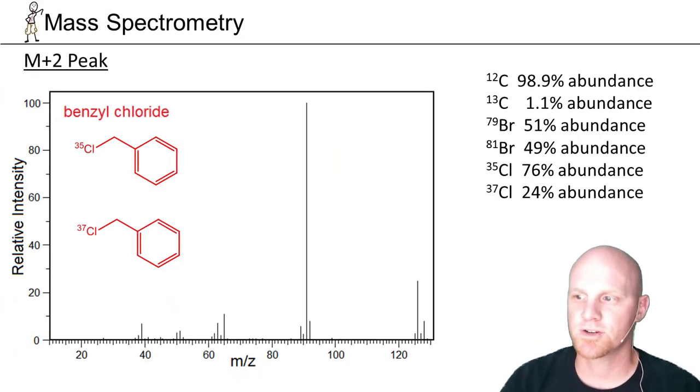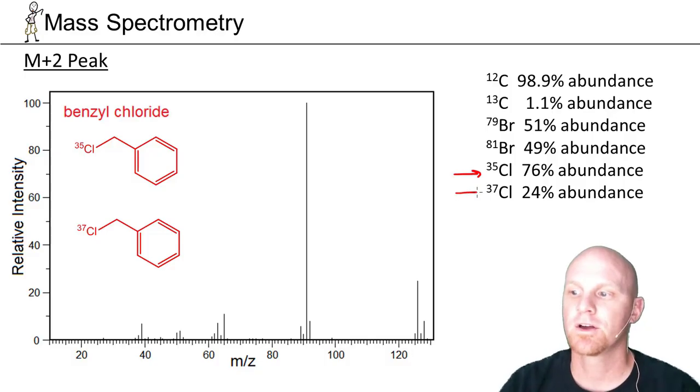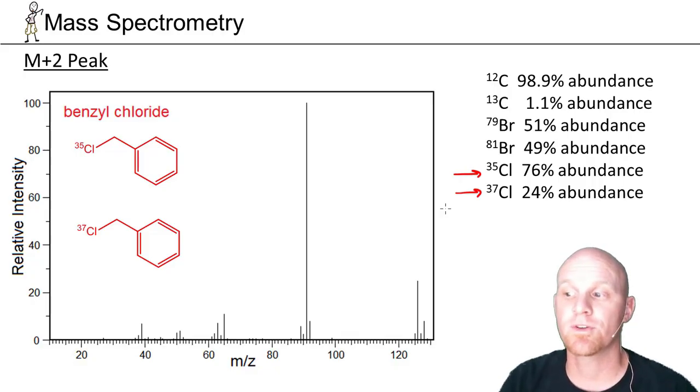Another element with two major isotopes is chlorine. In this case, it's chlorine-35 is the major, chlorine-37 is the minor. But it's not a 1 to 1 ratio. We see 76% natural abundance for chlorine-35 and a 24% abundance for chlorine-37, roughly about a 3 to 1 ratio.